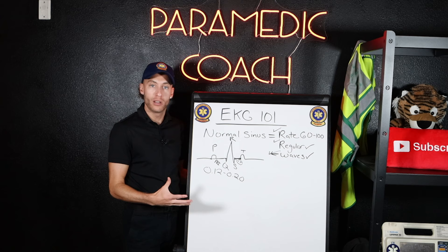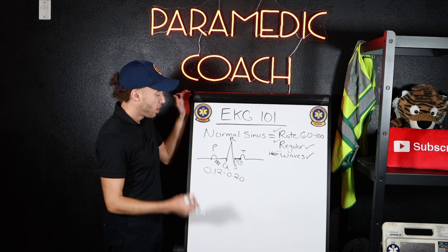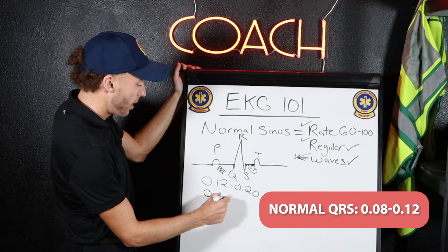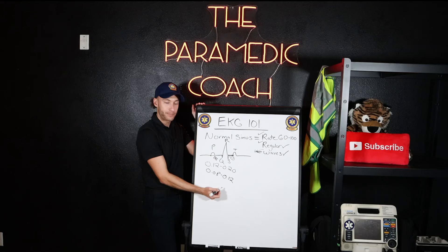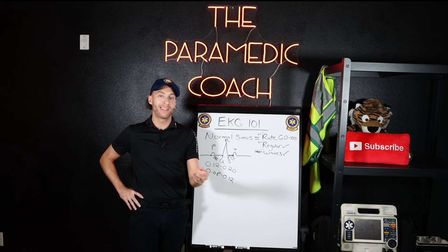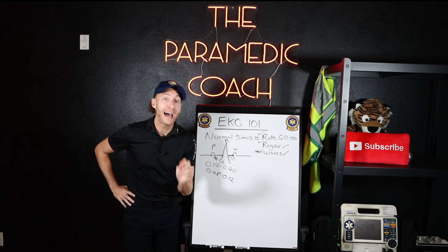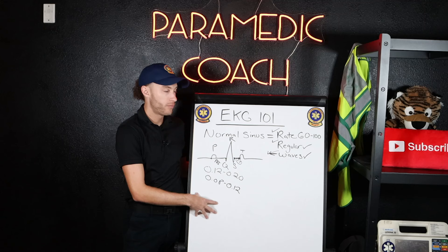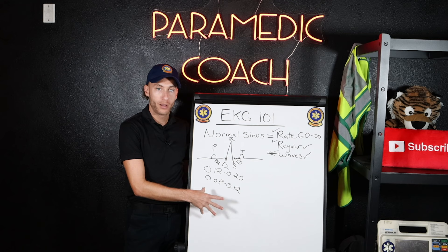One more tip before I wrap up. The QRS complex — the amount of time we're looking for the QRS to be normal is between 0.08 and 0.12 seconds. That's a normal QRS. In class, they may say a QRS greater than 0.10 or 0.11 is a delayed QRS — that's fine, but it's not a wide QRS. A wide QRS is greater than 0.12. Too short would be under 0.08. As long as you understand that, go ahead and replay this video. Watch it twice and you'll be on your way to understanding EKGs.